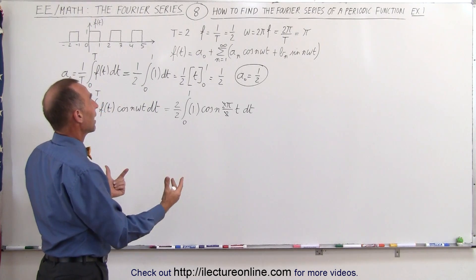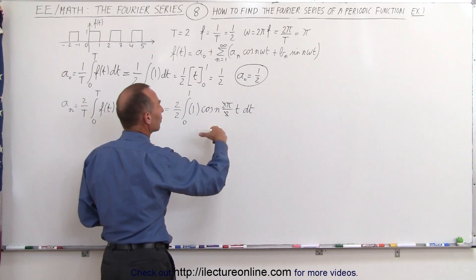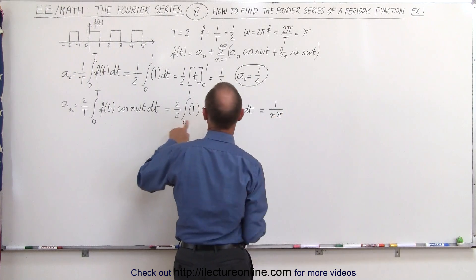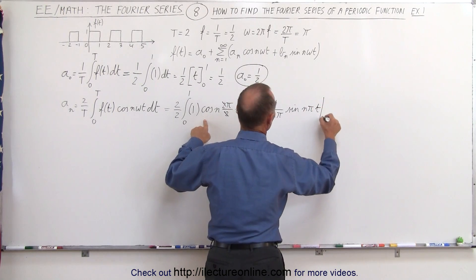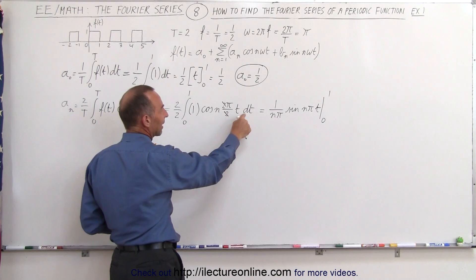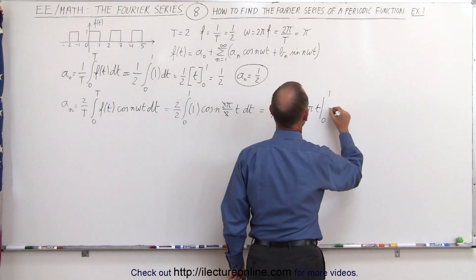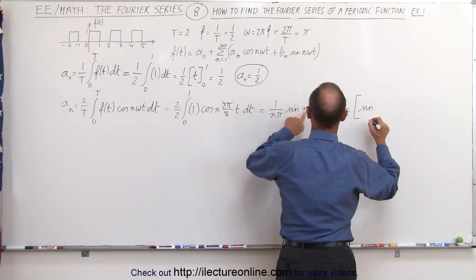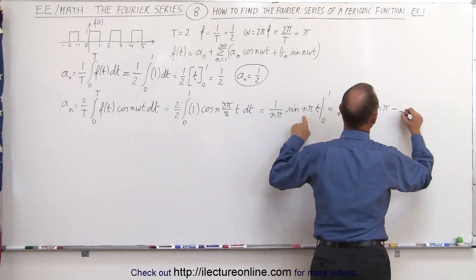When we integrate the cosine we get the sine, but we need the proper differential. Since we have n·π·t dt, we need to account for that, so the result is 1 over n·π times the sine of n·π·t evaluated from 0 to 1. The 2 over 2 becomes 1, and we multiply and divide by n·π to obtain the correct differential.